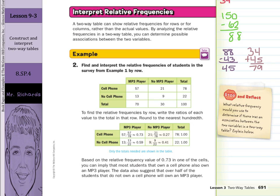And then the 21 out of 78, the 13 out of 22, and the 9 out of 22, and we get these decimals. Now, only the totals needed are shown in the table, and so we have 0.73, 0.59, 0.27. And so, based on the relative frequency value of 0.73 in one of the cells, you can imply that most students that own a cell phone also own an MP3 player. The data also suggests that over half the students that do not own a cell phone will own an MP3 player.